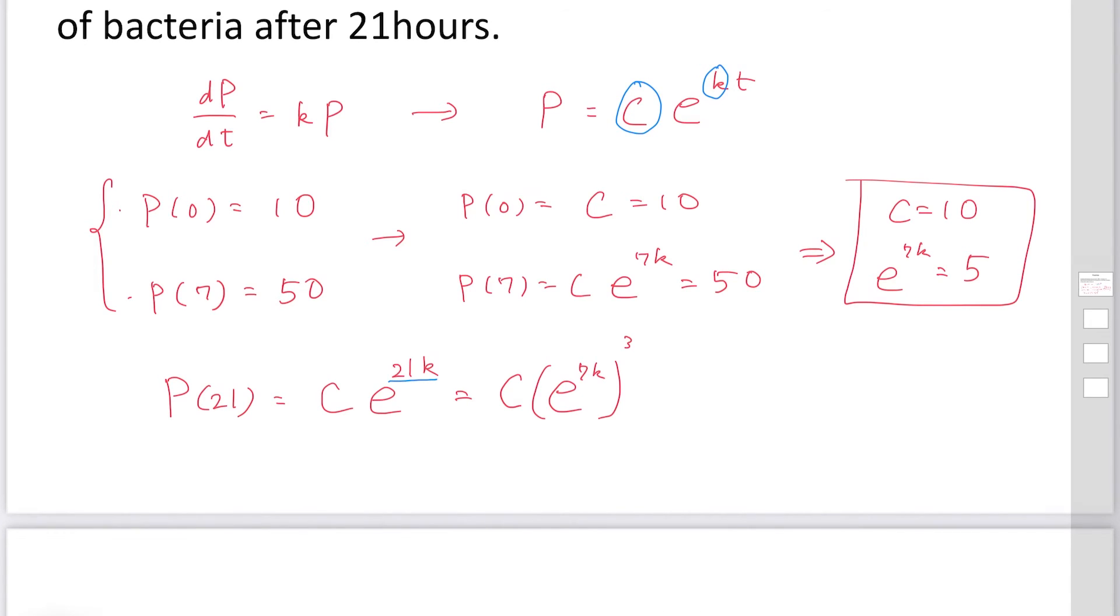Why we use these really strange expressions? 21k is equal to 7k times 3. Why we use 7k? Because we'd like to use exponential 7k equals 5.